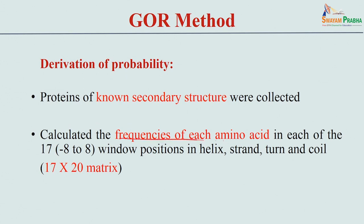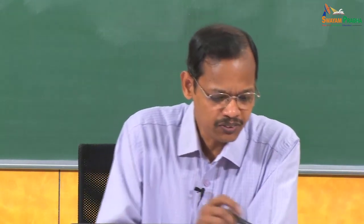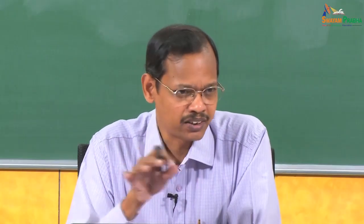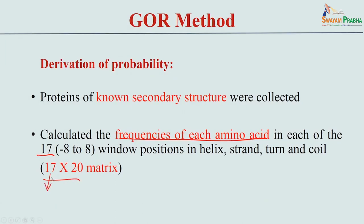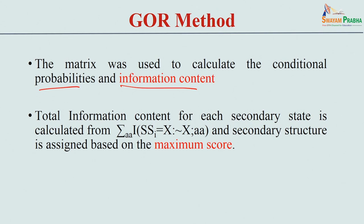They calculated the frequency of each amino acid in each of the 17 window positions, producing a 17 by 20 matrix — 17 for the window positions and 20 for the 20 amino acids. This matrix contains information about the preference of any particular residue at different positions and can be used to obtain the probability of a new residue belonging to each secondary structure class.